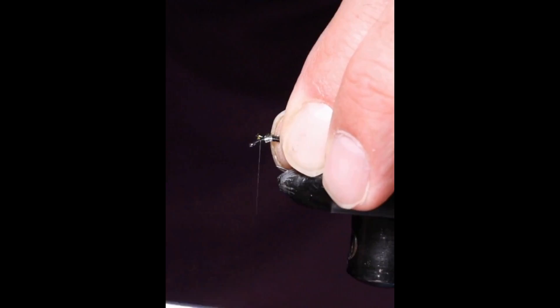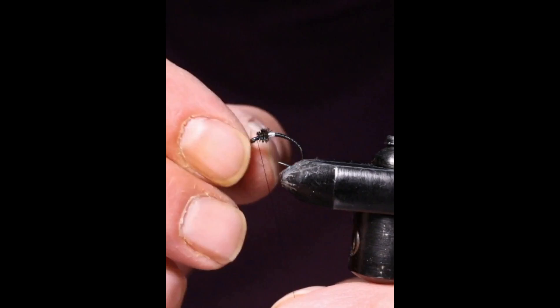Peacock hurl, one strand, tie that in, and then basically turn it around as many times as you want, tie that off.